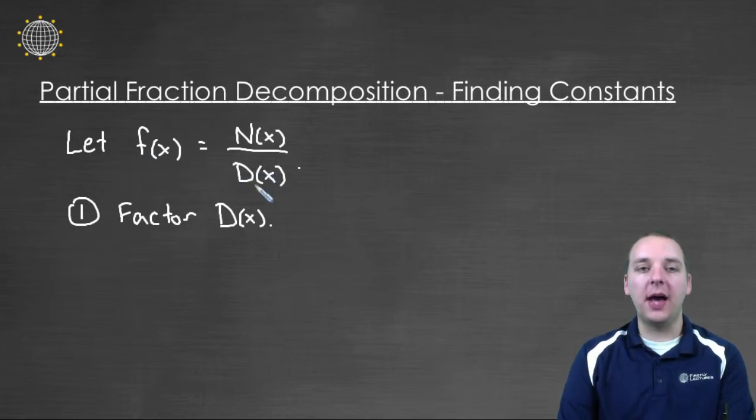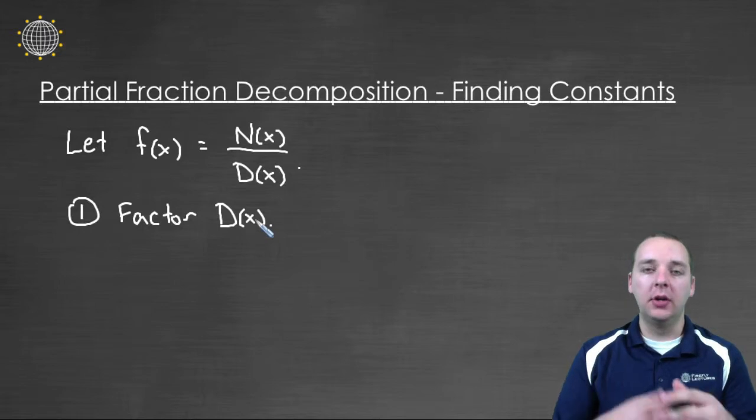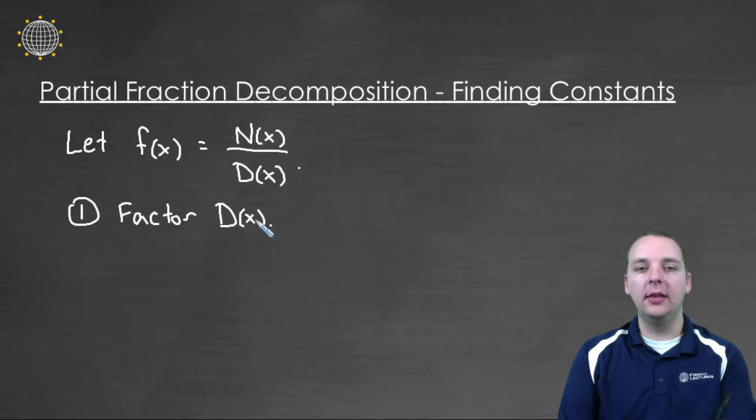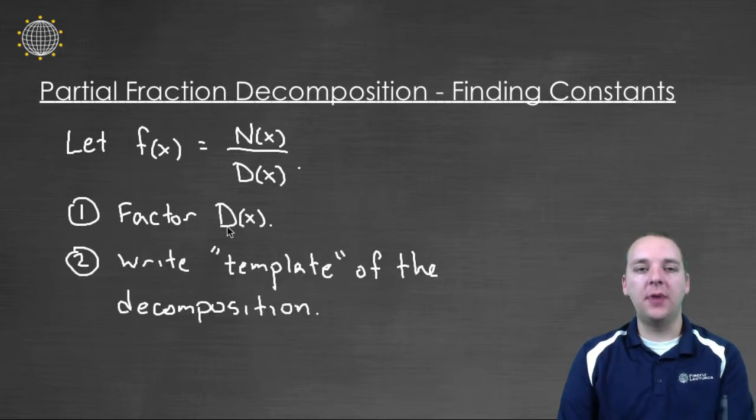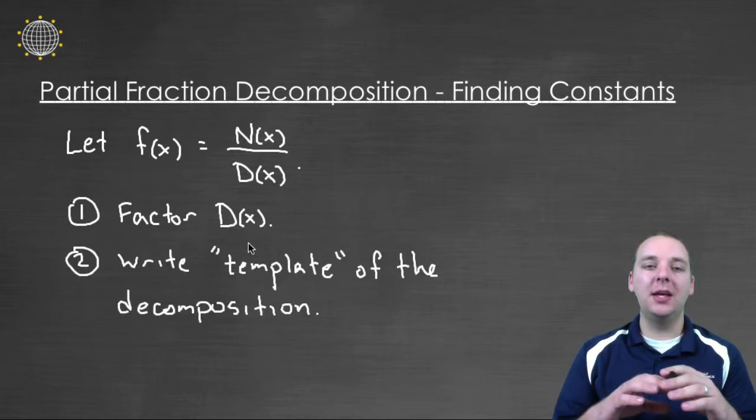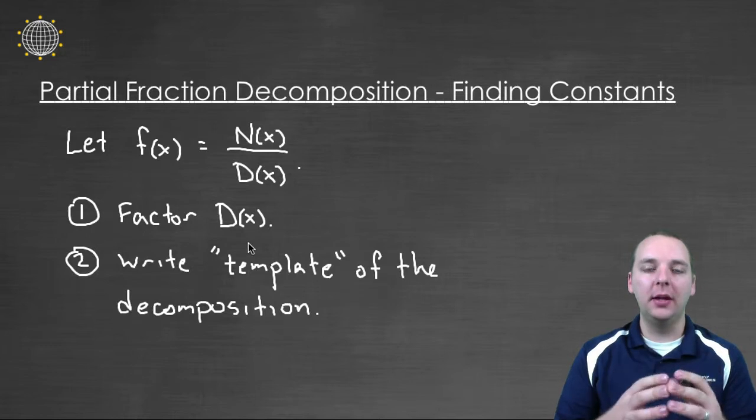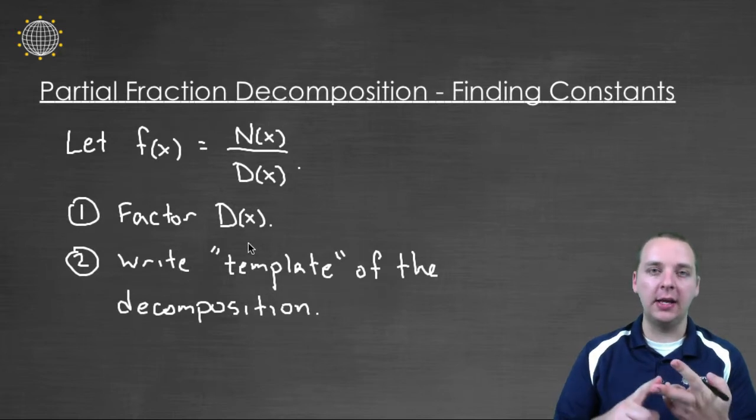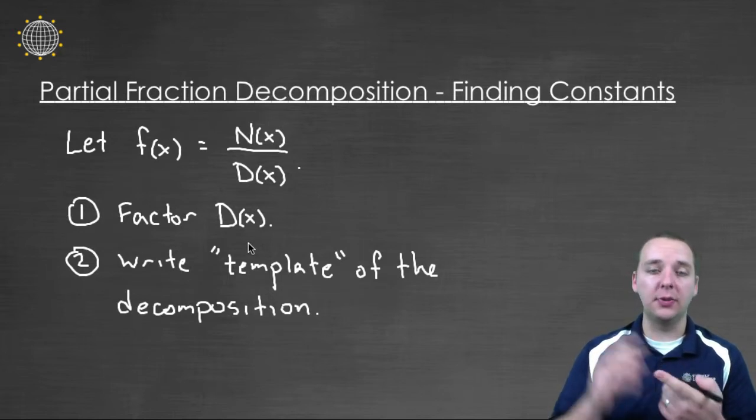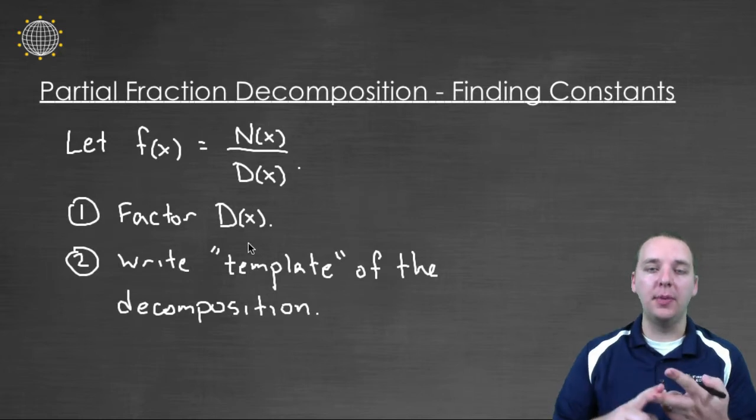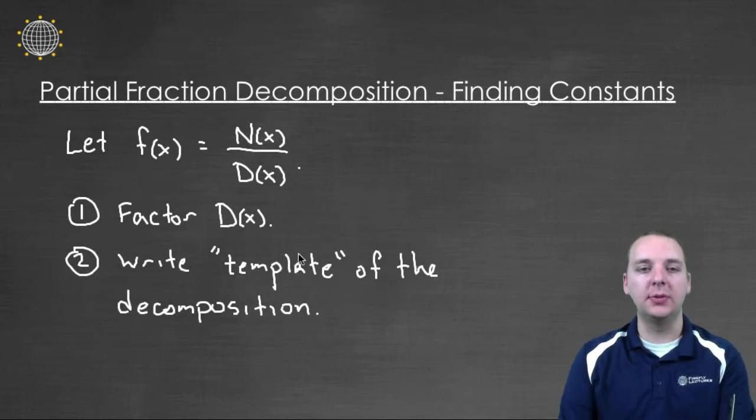We're going to first of all factor the denominator because the way the decomposition looks depends on what the factors look like in the denominator. Now once we factor the denominator, then we can make up what I like to call a template of what the decomposition is going to look like, depending on if those factors were like linear or quadratic or if they were repeated factors with a high power or not repeated where the exponent was one.